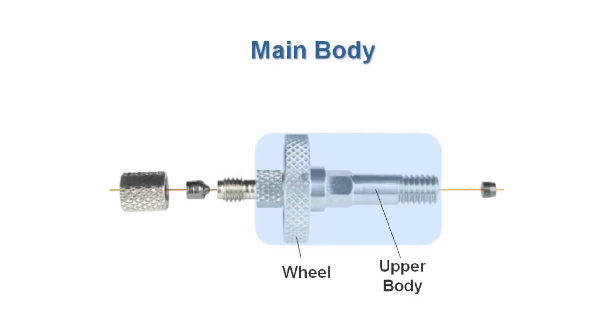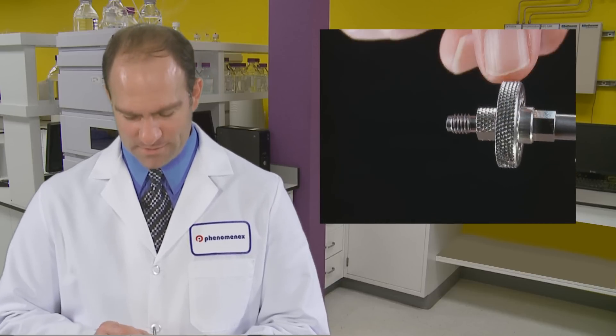The main body is comprised of the wheel and upper body, which is similar to a traditional nut. The wheel has been designed to be adjusted using your fingers, and therefore doesn't need any tools to adjust or install. Because the wheel mirrors the oven temperature and cools with the oven, you can avoid burning your fingers when removing your column. This is the cool feature of the cool lock nut.